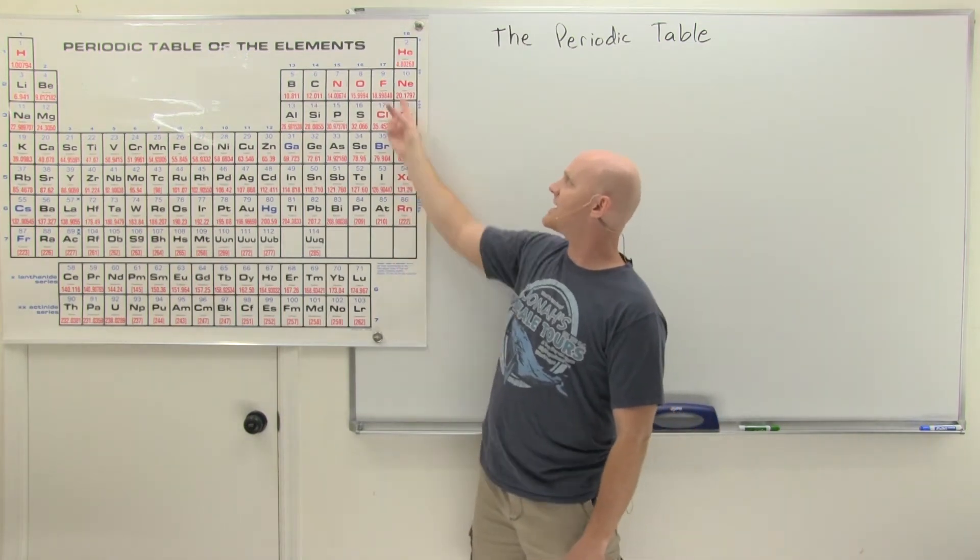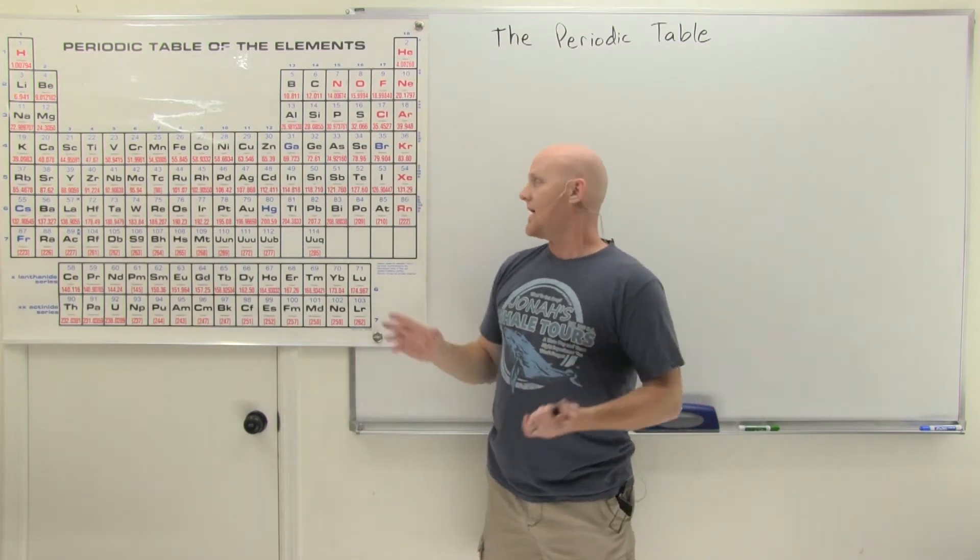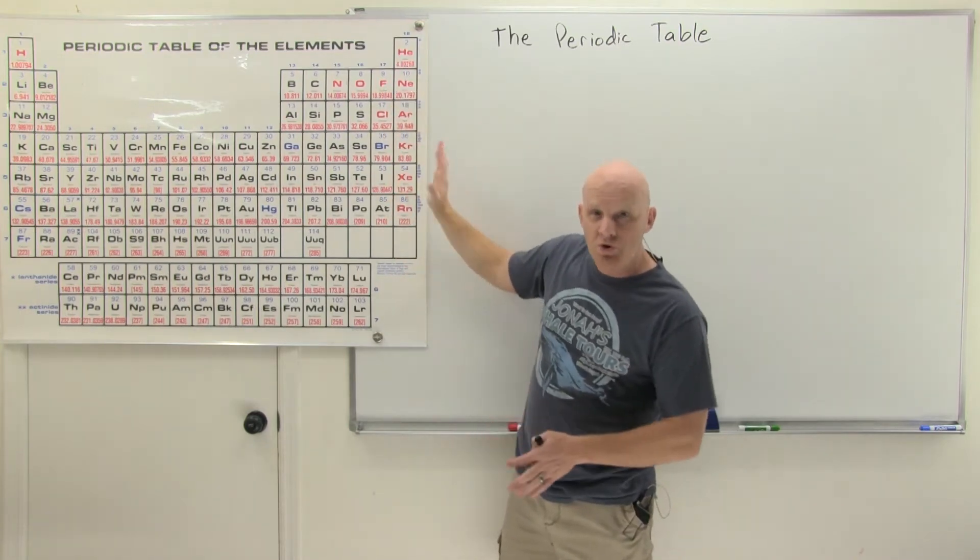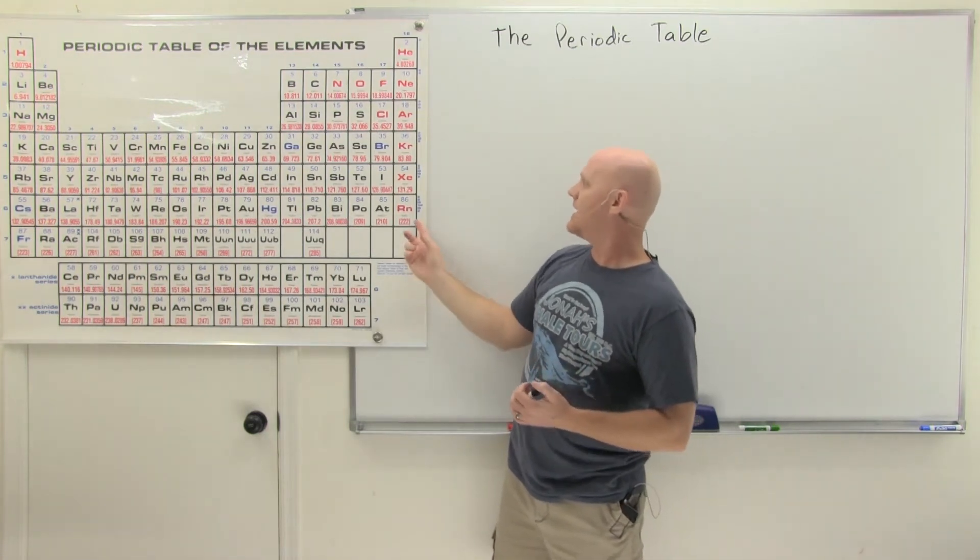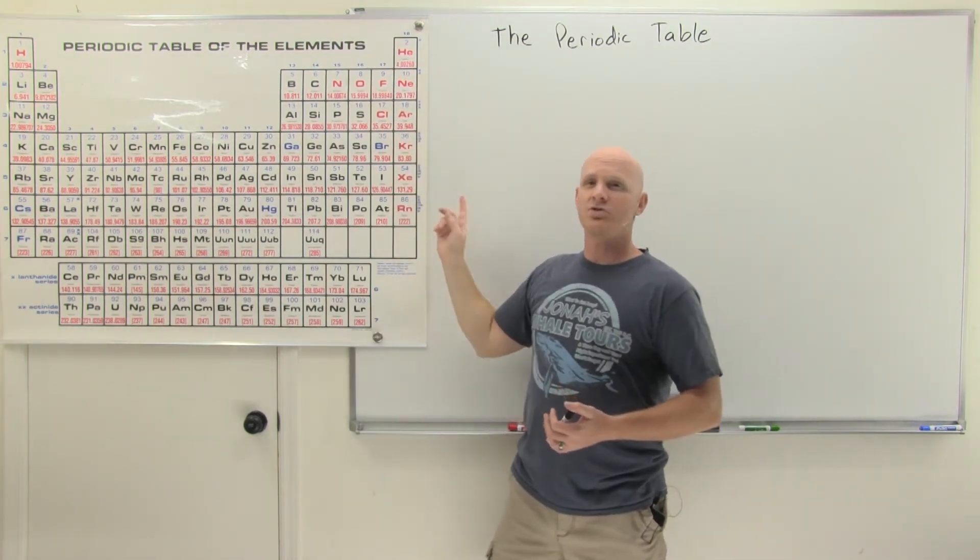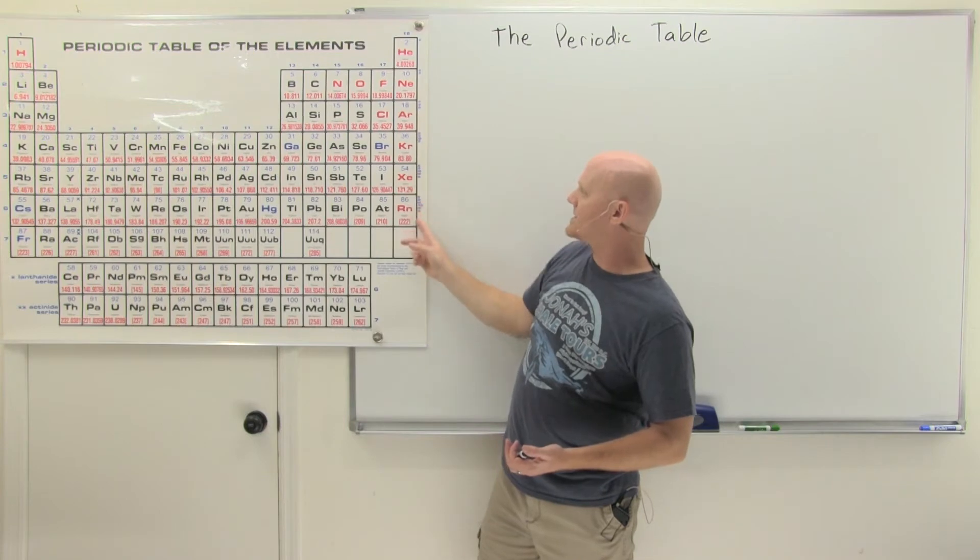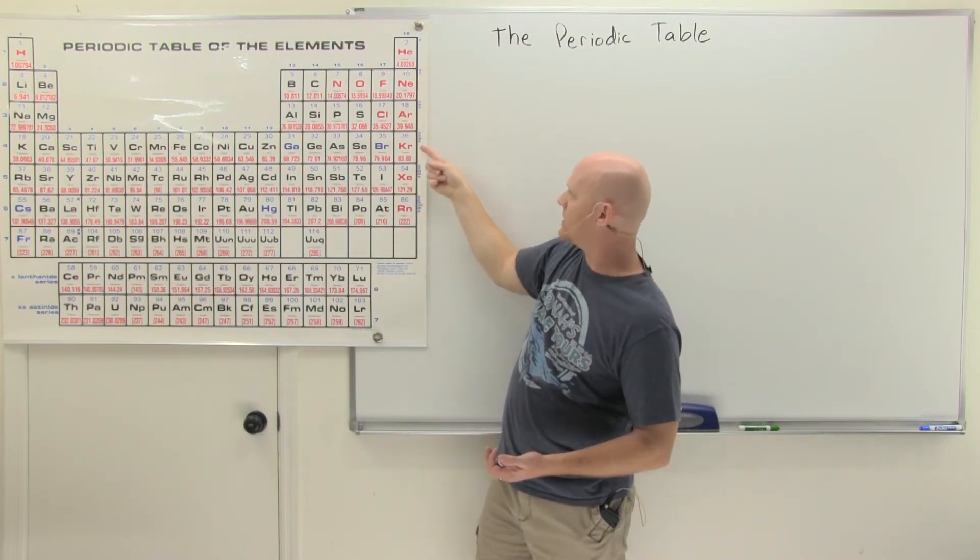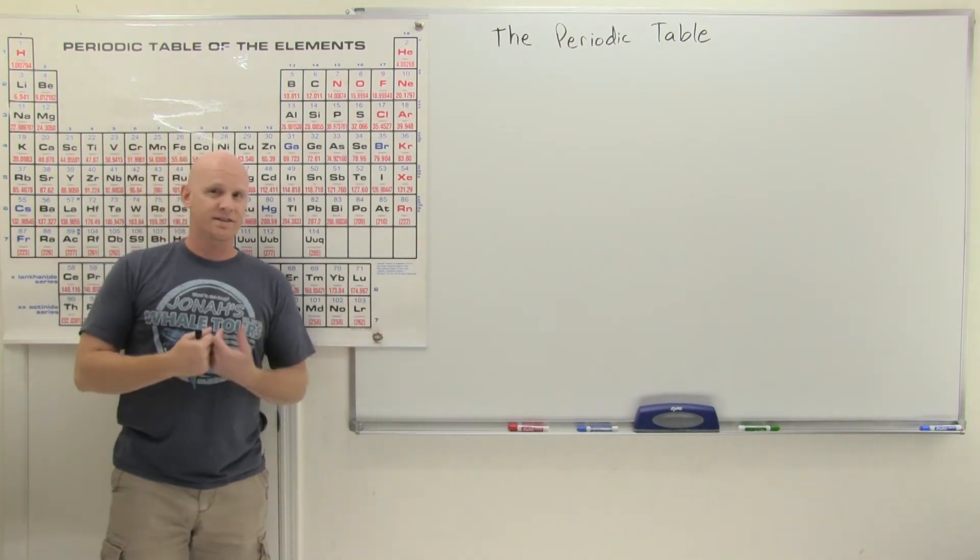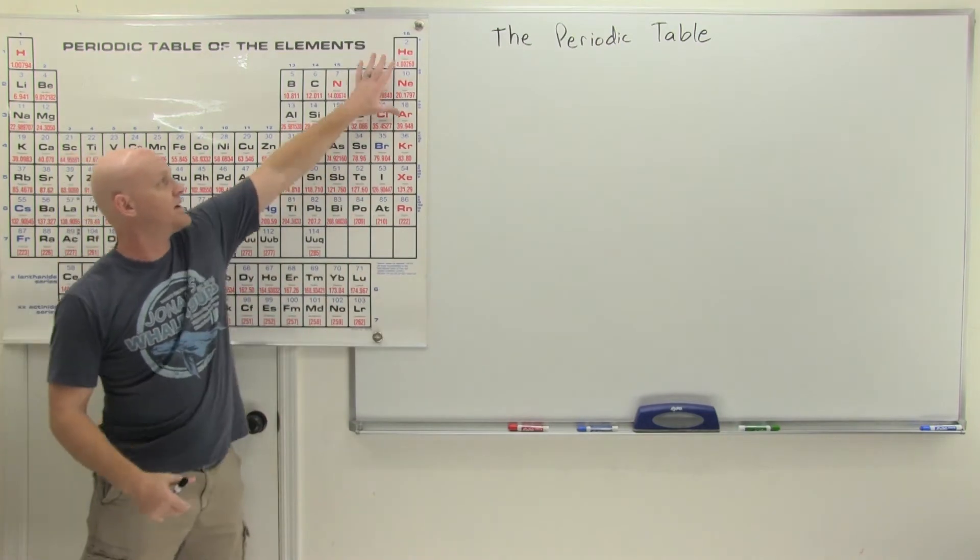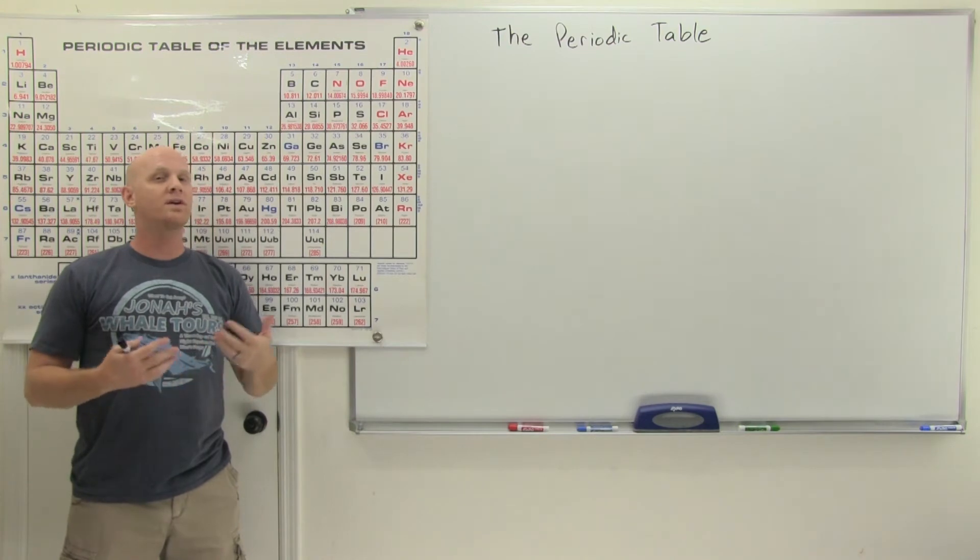It turns out that elements that are in the same column often have similar chemical properties. And as a result, we call these groups. We want to group together elements with similar chemical properties. In this case, the columns are groups, but it turns out the rows are going to be called periods. And the idea was this: let's say we got these guys here called the noble gases, by the way. So helium, neon, argon, krypton, xenon. So if we look, it turns out they're super unreactive. That's kind of their key characteristic. They do almost no chemical reactions. So the small ones definitely do none, and even some of the bigger ones do only a handful of chemical reactions. They're known as being what we call chemically inert.